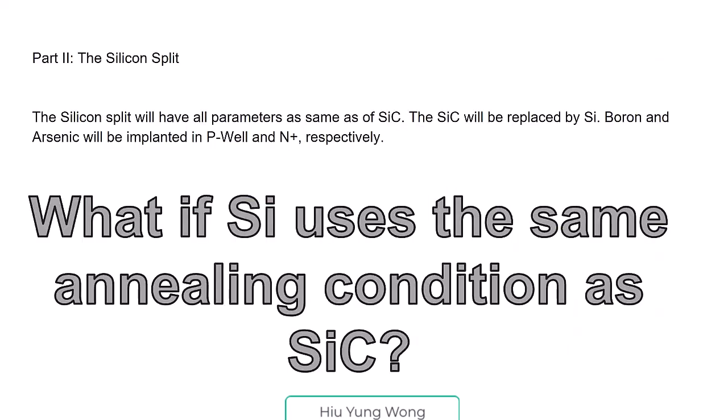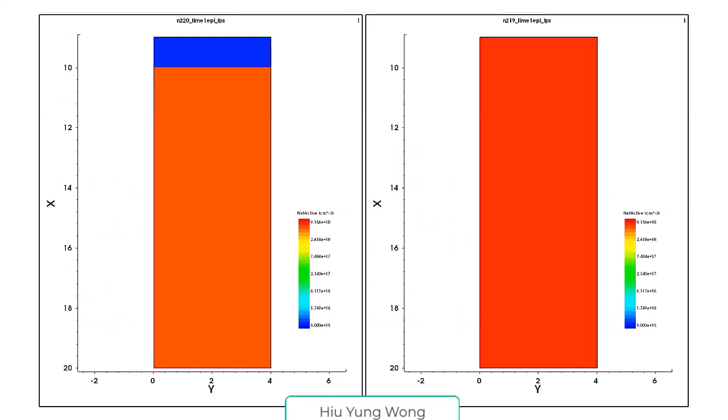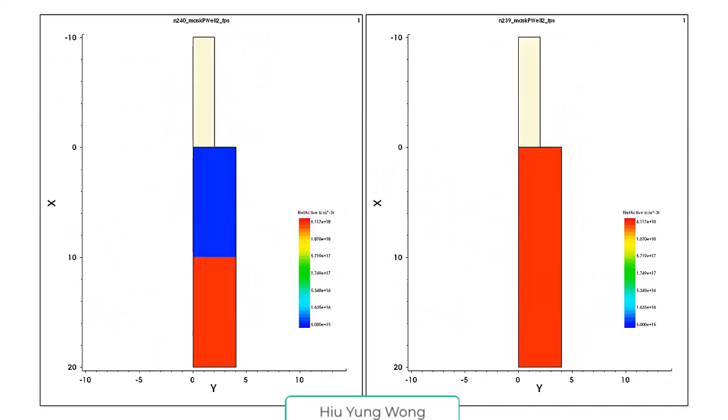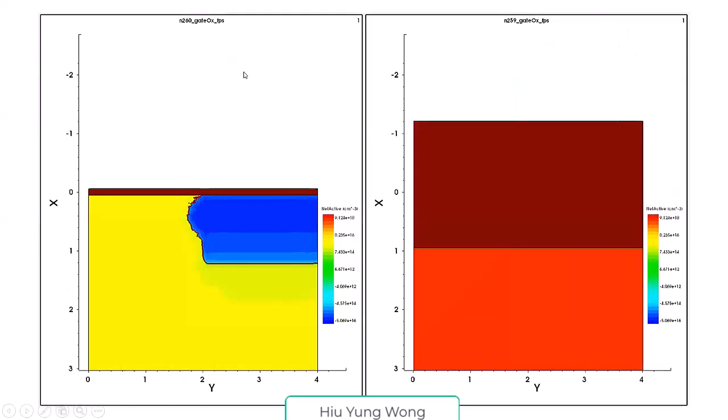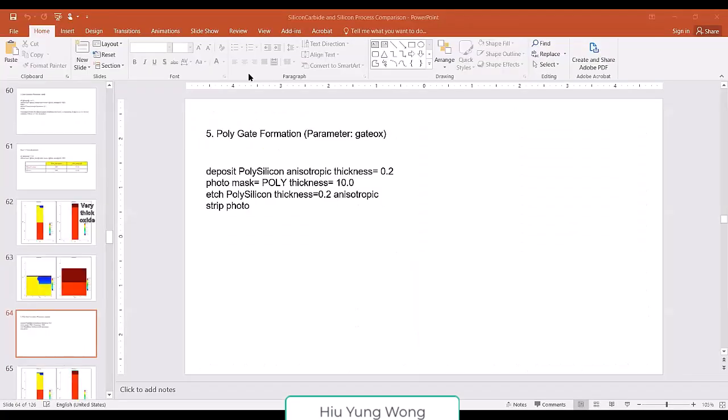Finally, I want to see what if the silicon uses the same condition as silicon carbide. You see that if I use the condition from silicon carbide, you get very thick oxide and also the dopant is uniform—they just diffuse like crazy. It's just like in the liquid, it's just everywhere. You cannot form the junction. That's all I want to show you.